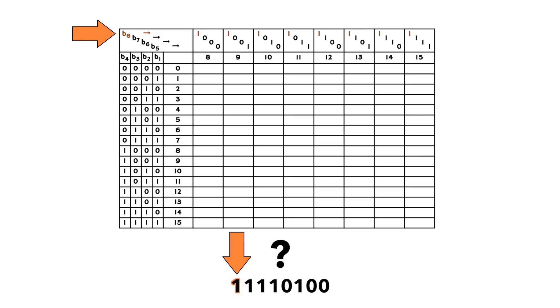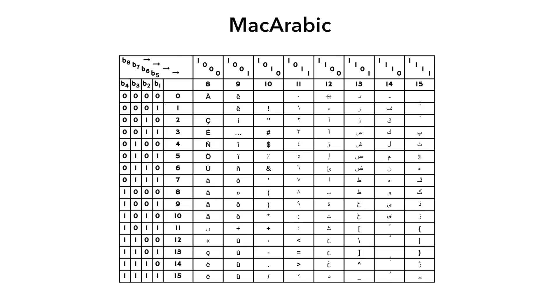Now we can have twice as many characters. Unfortunately, no one can agree on which characters should go in this extra space. Cyrillic language speakers want Cyrillic characters, Arabic speakers want Arabic characters, and Thai speakers want Thai characters. For the most part, each of these groups had to work independently, and files created with Cyrillic software would make characters that couldn't be read by Arabic software, because they reused the same parts of the table. But they could all use basic Latin characters because nobody changed the ASCII half of the table.